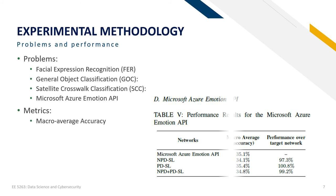Finally, let's look at the result of the Microsoft Azure Emotion API. As seen from the table, it performed poorly on the test dataset compared to the FER experiments. Nonetheless, the copycat networks managed to achieve performance very close to the API. Without using any data from the problem domain, the copycat network achieved 97.6% of the API's performance. Using only data from the problem domain, 100.8% of the API's performance was achieved. Surprisingly, combining both was worse than using only problem domain data.